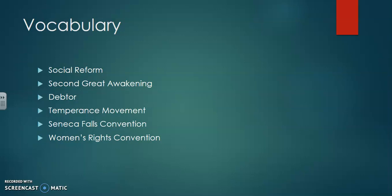The vocab you have for this section is: social reform, Second Great Awakening, debtor, temperance movement, Seneca Falls Convention, and women's rights convention. That is your vocab for this chapter. Please make sure you write those down so you have a place to define them.